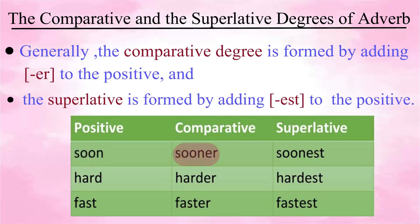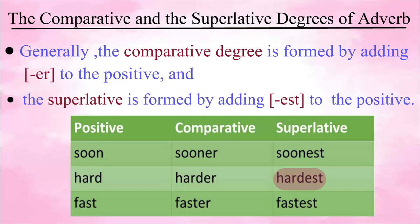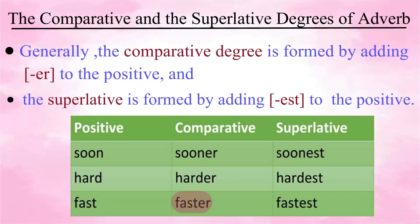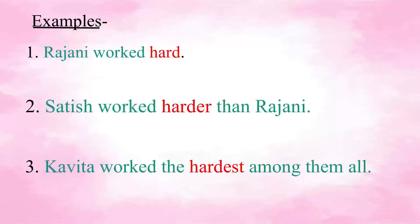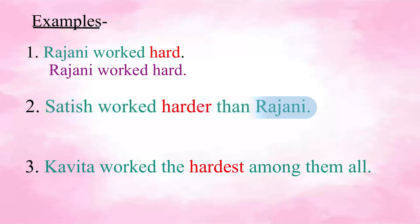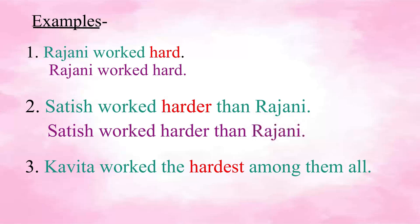Soon, sooner, soonest. Hard, harder, hardest. Fast, faster, fastest. Now let us use these in sentences. Rajini worked hard. Satish worked harder than Rajini. Kavita worked the hardest among them all.